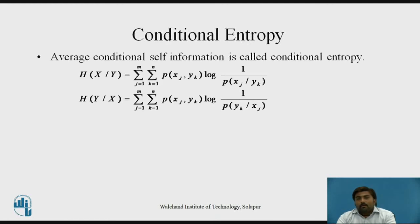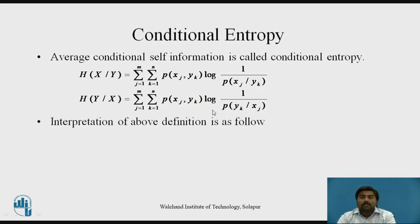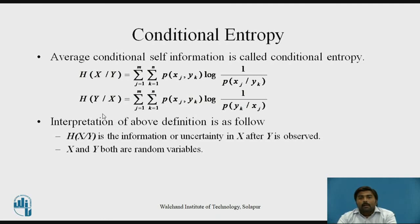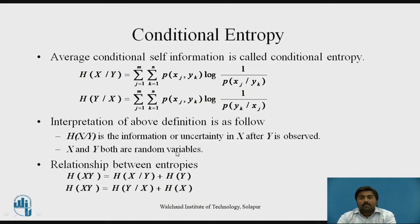Next is conditional entropy. This is nothing but the average conditional self-information, called conditional entropy. It is given by the equation: H(X|Y) = summation j from 1 to m and summation k from 1 to n of p(xj, yk) times log of 1 upon p(xj|yk). H(X|Y) represents the information in x — the source — after observing y, the receiver. In the second case, you have information in the receiver by observing the source. Both x and y are random variables. Some relationships between entropies are: joint entropy equals conditional entropy plus entropy of the receiver; and joint entropy equals conditional entropy plus entropy of the transmitter or source. How these are derived will be covered in the next video.